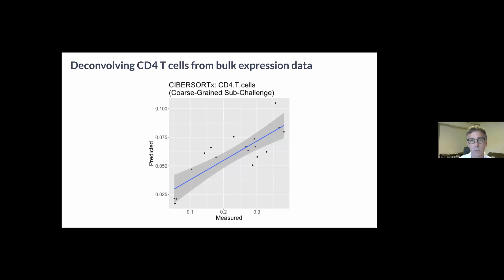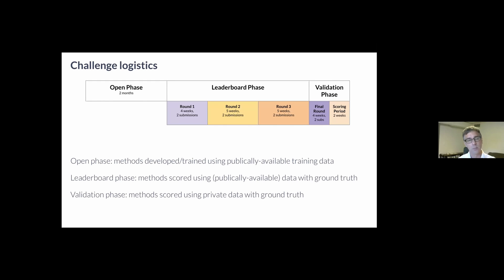We wanted to accommodate both these broad classes of approaches, so we went for the least common denominator and compared predictions across samples so that approaches like MCP-counter would still be amenable to our setup. Here I'm showing CIBERSORTx predictions of CD4 levels on the y-axis against ground truth on the x-axis with each dot being a sample.